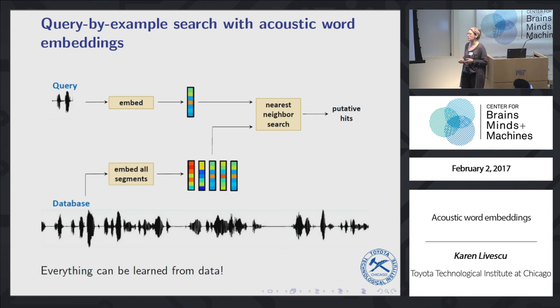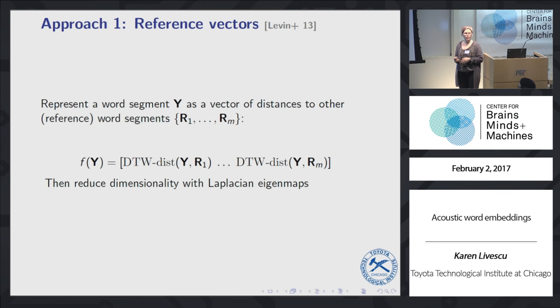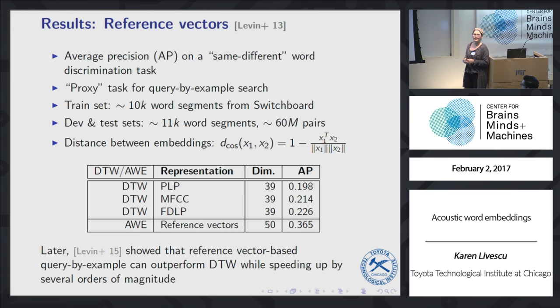Our first approach to acoustic word embeddings represents a word as a list of DTW distances between our word segment y and a bunch of reference word segments r1 through rm — a long vector of similarities that says how close a word is to other words. We then reduce dimensionality, using Laplacian eigenmaps in this work. Our proxy task is a same-different decision task: given many pairs of word segments, we say same or different for each pair.